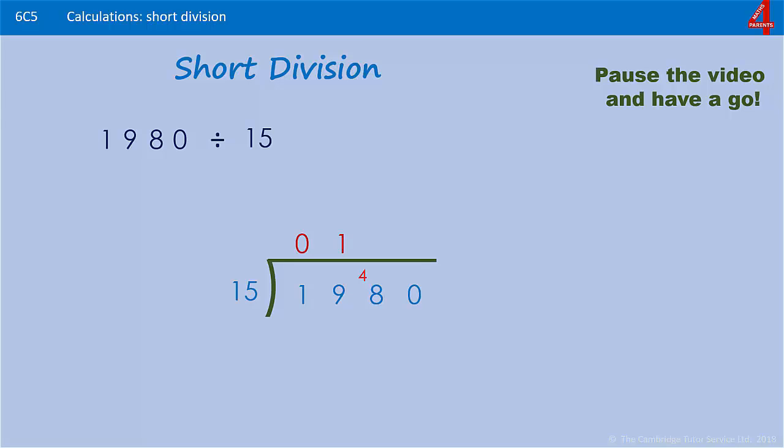How many times does 15 go into 48? Three lots of 15 is 45, so we can get three lots of 15 in there and that's three left over. Now we're asking how many times does 15 go into 30. It goes in exactly twice. 1980 divided by 15 is 132.